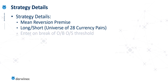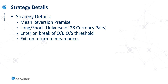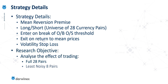The strategy enters a trade on the break of an overbought or oversold signal, and then exits the trade when prices return to mean levels. I've also incorporated a volatility stop loss to protect from any significant losses. The strategy itself is not the sole focus of this episode — our objective is to analyse the effect of noise.